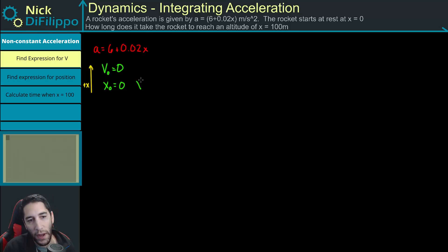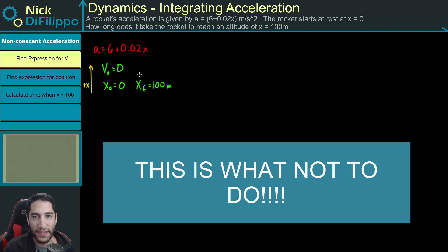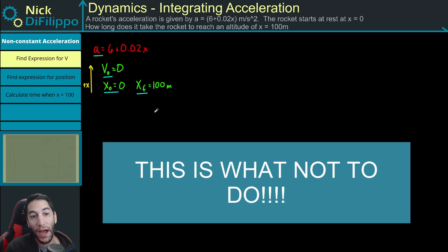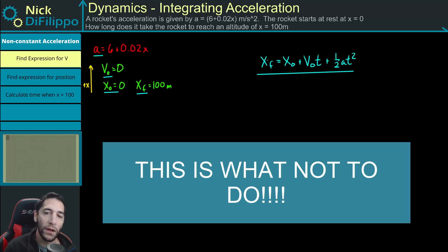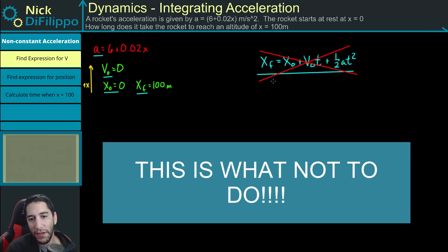So we're looking for what happens when our final position is equal to 100 meters. This problem is actually harder than it originally seems. You might think: I have an initial position, a final position, an initial velocity, an acceleration, and I'm looking for time. There's an equation that relates all those: final position equals initial position plus initial velocity times time plus one-half at squared, and I can just solve for time. Well, you cannot use this equation — it is not valid for this problem.